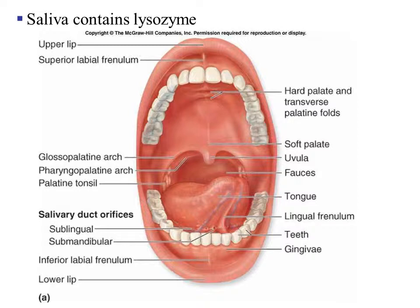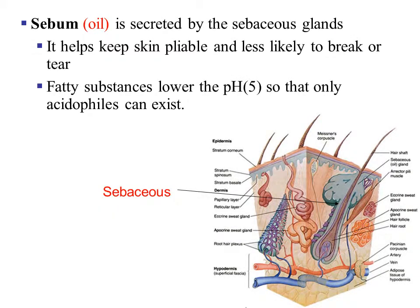The next chemical barrier is saliva, found in the oral cavity, which contains lysozyme that destroys the bacterial cell wall. The next chemical process is sebum, an oil secreted from the sebaceous gland. This oil helps keep the skin pliable, making it less likely to break or tear. If the skin breaks or tears, bacteria can penetrate the bloodstream or tissue. Sebum also lowers the pH so that only acidophiles can exist.